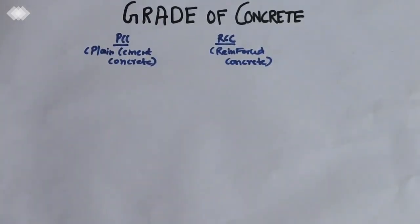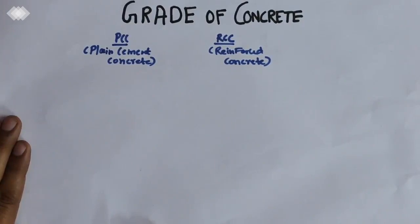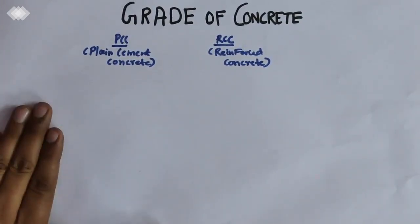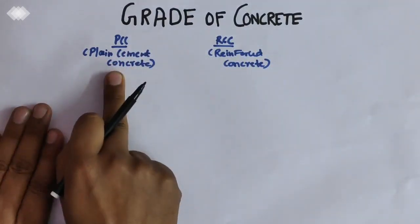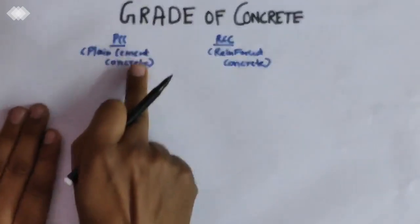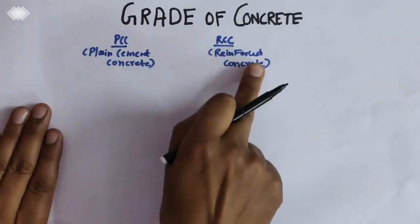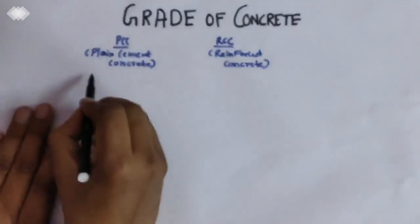Today I'm going to discuss the grade of concrete, what are the different grades of concrete and their respective ratios. First of all, I would like to tell you the grade of concrete comes under PCC and RCC. PCC is plain cement concrete and RCC is reinforced concrete.